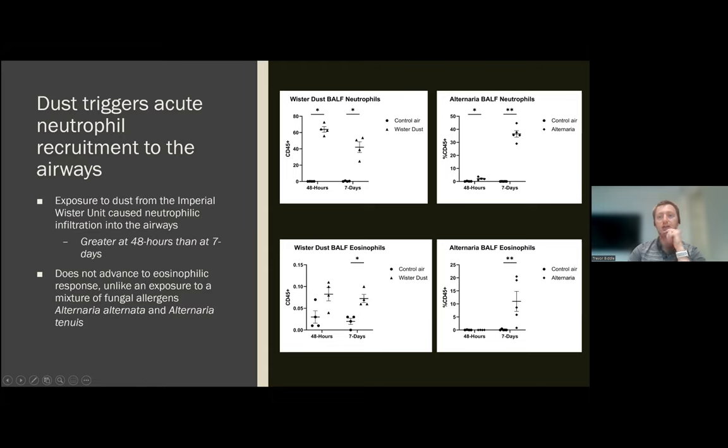This is kind of the opposite of what you would expect if it was more similar to an allergic type of response. Alternaria is a fungal allergen and kind of serves as our positive control for an allergic exposure. And as you can see, for an allergic exposure, you'd expect a weaker response at 48 hours that gets more strong over time as the T cell immune response develops. And importantly, this also includes eosinophils, a large increase in eosinophils, which is a marker of allergic asthma, which we just don't see in the Worcester dust exposed.